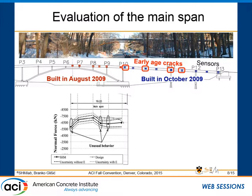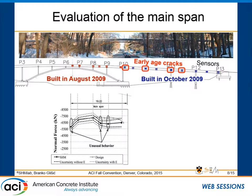We used the sensors to calculate the pre-stressing force inside the bridge and compared it with the design to see if there is good agreement. In this image, the black continuous line is what we got from monitoring, the gray line is the design, and the dashed lines are the band of uncertainty. The darker uncertainty band excludes uncertainty in the Young's modulus of the concrete, while the other shows how much the uncertainty in Young's modulus adds to the interpretation. The Young's modulus was calculated from strength using the ACI formula, which gives plus or minus 20% uncertainty.